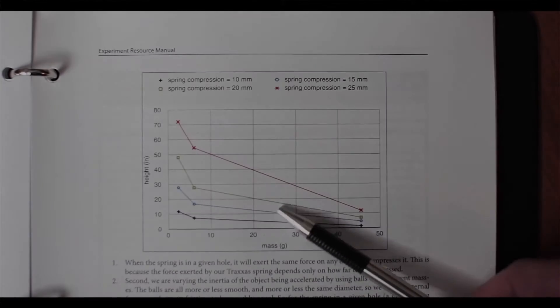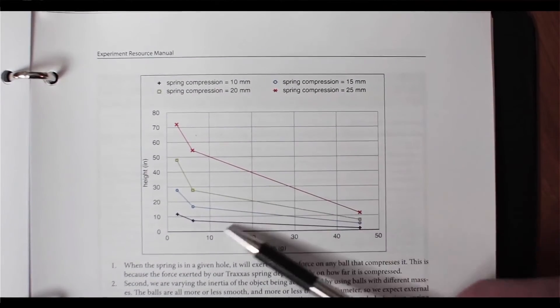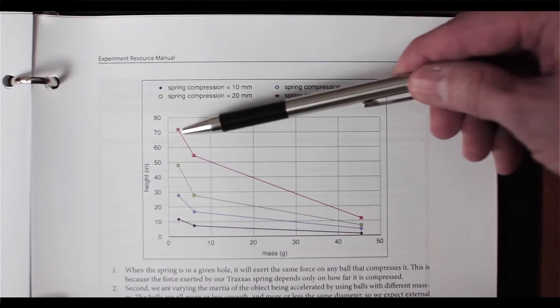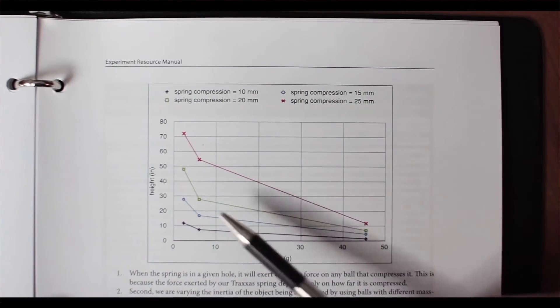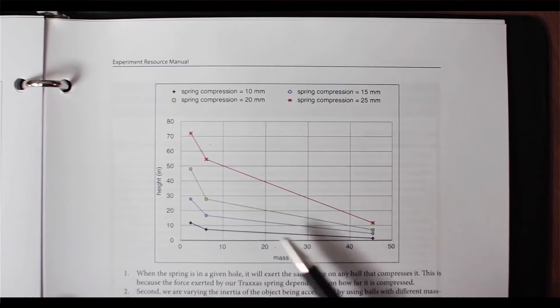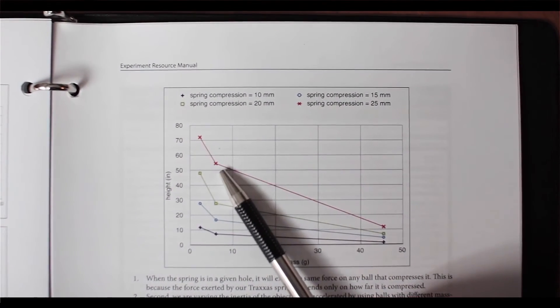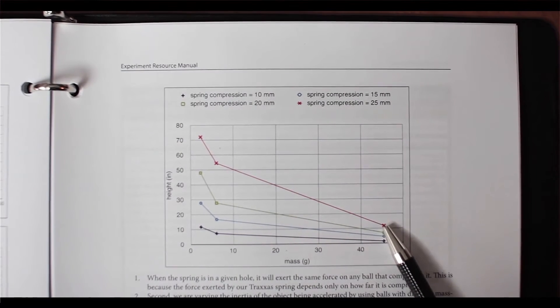After we finish collecting our data, we want to use it to prepare a graph like this one. The four curves on this graph represent the four different spring locations in the launching block and the three data points on the curve represent the three different balls.